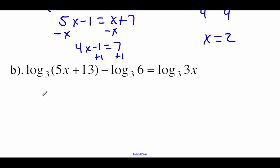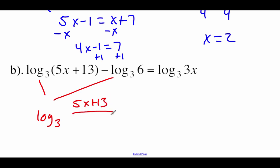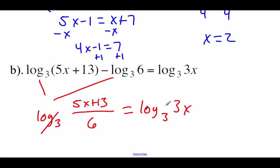Since it's subtraction, we're going to turn it into a fraction. So we take these two logarithms, combine them into a single logarithm base 3. We take the first thing, the 5x plus 13, put it on top of the fraction, put the 6 on the bottom of the fraction, and then that's going to equal our log base 3 of 3x. Now we've got just a single log base 3 on both sides, so I'm going to cross those things off using that one-to-one property.